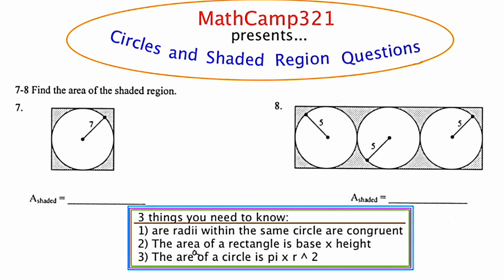So without further ado, let's dive in. Looking at number 7, I see we've got a circle stuffed inside of a rectangle, or maybe it's a square. I'm supposed to find the area of the shaded region, which is represented by those dots. The first thing I'm going to do is use the fact that all radii within the same circle are congruent, and I'm going to reorient the radii. Right now we've got this radius 7 but it's jutting up on an angle. I'm going to reorient it by making it horizontal and going straight across.